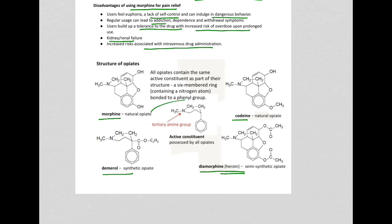From morphine, you get codeine or heroin. Codeine is a safer version of morphine, heroin is a more dangerous version of morphine, and demerol is a synthetic version of the drug.